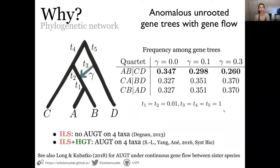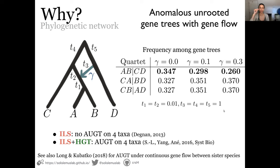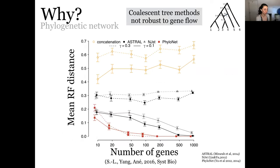The AC and BC clades, which conflict with the main tree, are then called anomalous gene trees. While Degnan showed there are no anomalous gene trees with four taxa under ILS only, we showed in our work that if you have gene flow events, you can have anomalous gene trees even with as few as four or three taxa. The presence of gene flow can cause certain gene tree topologies to appear in higher frequencies, which is why species tree methods get fooled by the signal in the data.